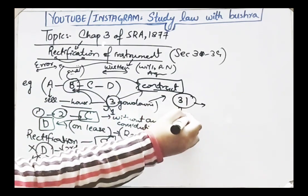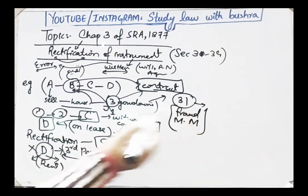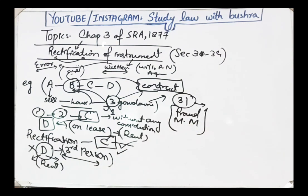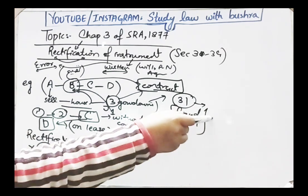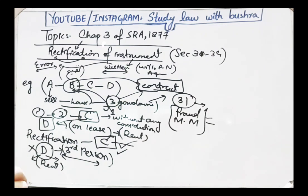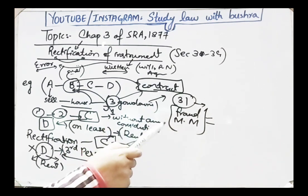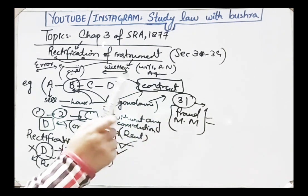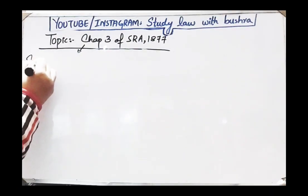So from Section 31 we learned that rectification occurs when the elements of fraud or mutual mistake are present in a contract. When both these elements are present, the court will rectify the contract, but it will never go against a third person's rights where that third person's rights are affected and they were unaware of the fraud.